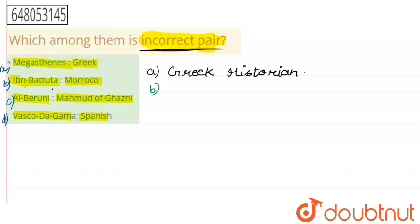Option B is Ibn Battuta paired with Morocco. He was born and brought up in Morocco, so that is the correct pairing. Similarly, option C is Al Baruni paired with Mahmood of Ghazni. Al Baruni was associated with Mahmood of Ghazni, so this is also a correct pairing.